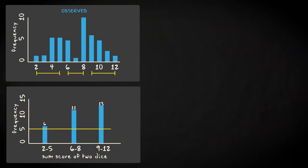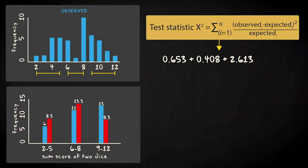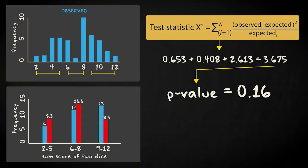This is the observed frequency distribution for the aggregated categories, and here is the expected distribution. Now we can apply the equation to calculate the chi-squared test statistic. It turns out to have a value of 3.68, which corresponds to a p-value of 0.16. So we will not reject the null hypothesis that the two dice are fair.